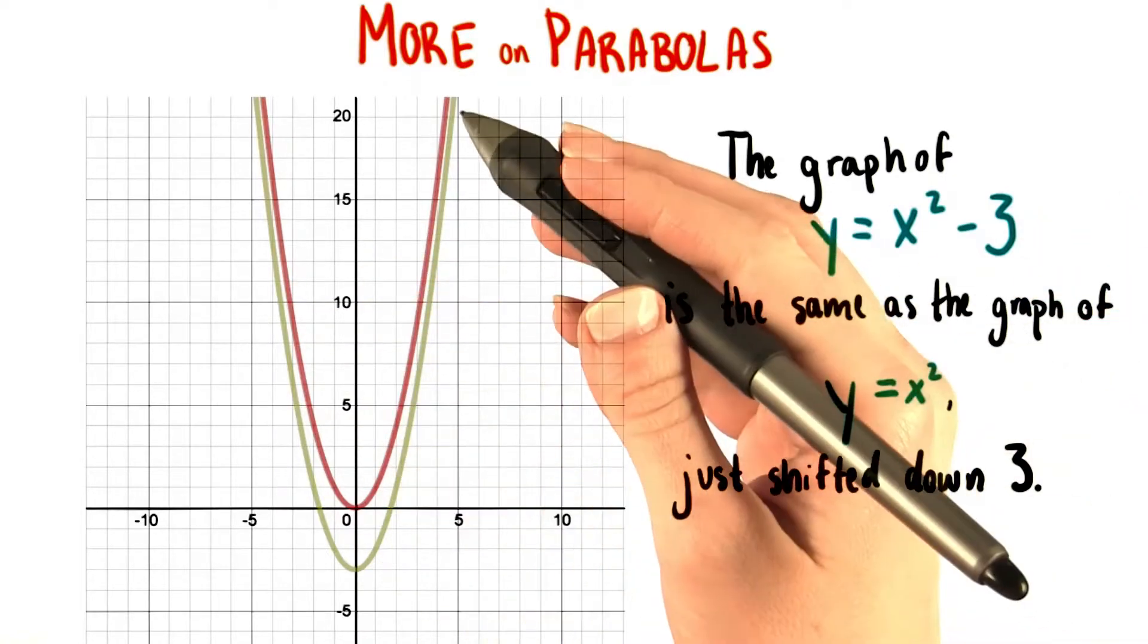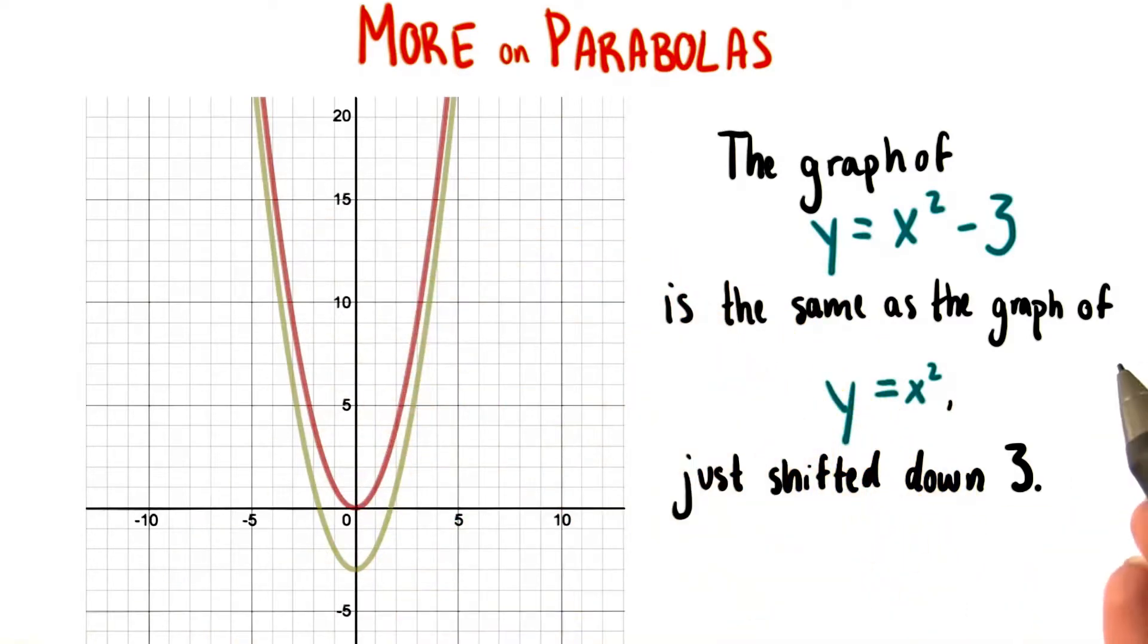If we shifted the green curve up 3, then it would exactly overlap with the red one. This is pretty interesting.